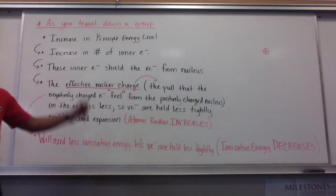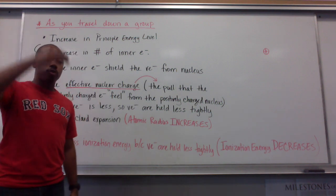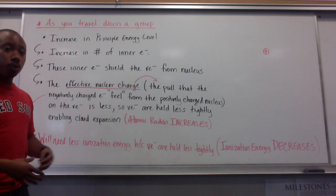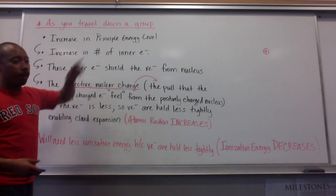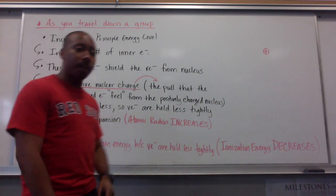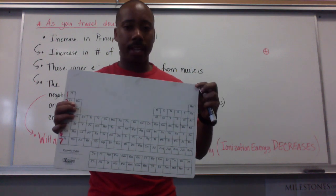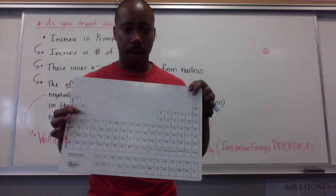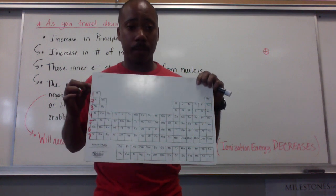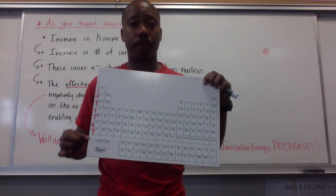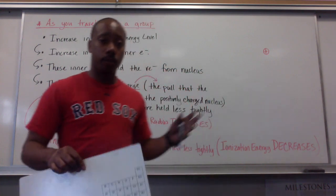First, as you travel down a group — remember, groups are our columns — as you travel down a given group, you'll see these things. First, an increase in principal energy levels. If you look at the periodic table here, as you go down the group, you increase in principal energy level. You increase in your energy level in general.